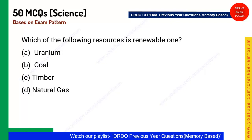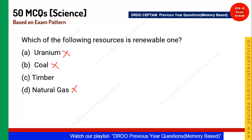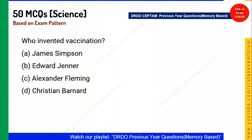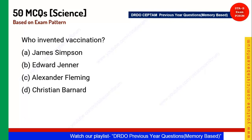Next question: Which of the following resources is a renewable one? You can eliminate uranium, coal, and natural gas immediately. You are left with timber — timber means plants, and plants are renewable. Timber is the correct answer.